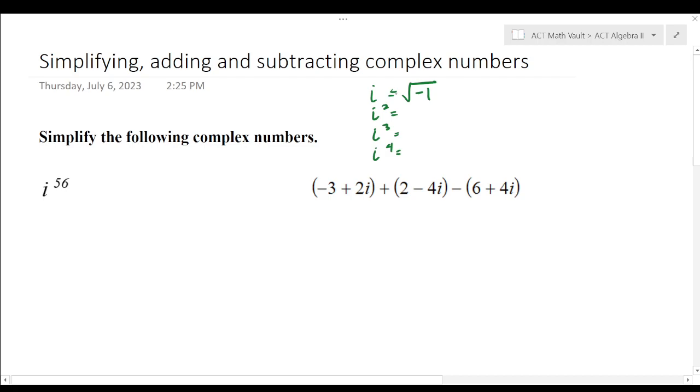So, i squared, if i is just the square root of negative one, then i squared is just going to be two of those multiplied. And whenever you square something that's a square root, the square root just drops off. So, i squared is equal to negative one.